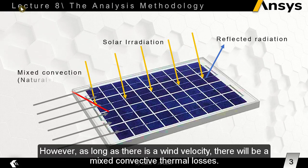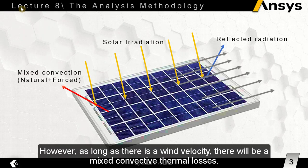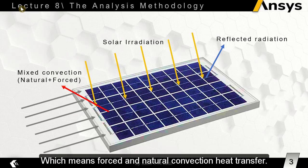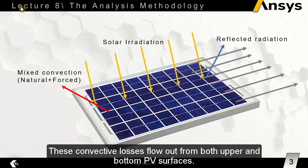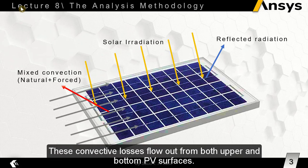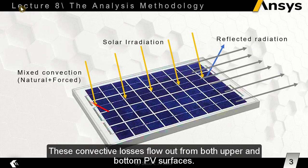However, as long as there is a wind velocity, there will be mixed convective thermal losses, which means forced and natural convection heat transfer. These convective losses flow out from both upper and bottom PV surfaces.